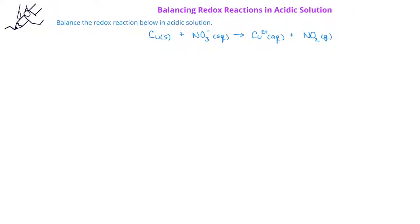In this problem, we're asked to balance the redox reaction below in acidic solution. In this redox reaction, we see copper metal reacting with aqueous nitrate ions to produce aqueous copper 2 plus ions and NO2 gas.